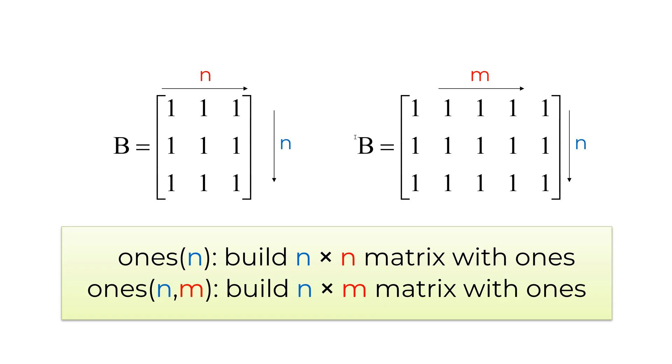If you want to create N by N matrix with all elements of 1s, you can use ones, followed by N. If you have non-square matrix, you can use ones(N, M). For example, B equals ones(3) to create 3 by 3 matrix B with 1s, and B equals ones(3, 5) build 3 by 5 matrix B with 1s.